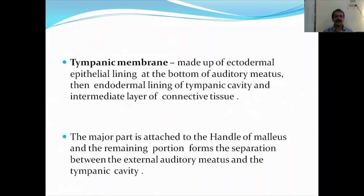Coming to the tympanic membrane. The tympanic membrane is made up of ectodermal epithelial lining at the bottom of the auditory meatus, endodermal lining of the tympanic cavity, and an intermediate layer of connective tissue — so three sources of origin: ectoderm, endoderm, and mesoderm. The mesoderm part is attached to the handle of the malleus, and the remaining portion forms the separation between the external auditory meatus and the tympanic cavity.